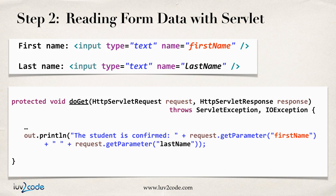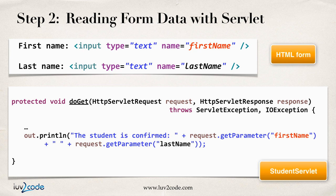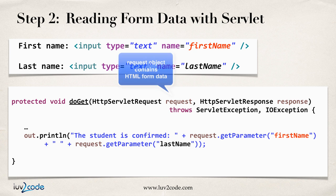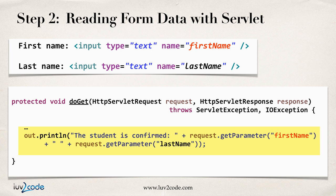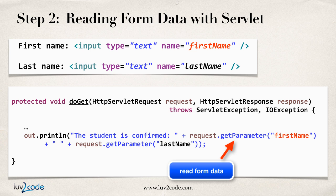The next step is reading the form data in the servlet. At the top I showed you the first name and last name fields, and at the bottom this is the actual servlet code. We override the doGet method — they pass in a request object, which contains the form data. Here I simply use out.println to confirm the student, and I call request.getParameter() to read form data — request.getParameter for first name and request.getParameter for last name. Those parameter names map to the actual HTML form field names.